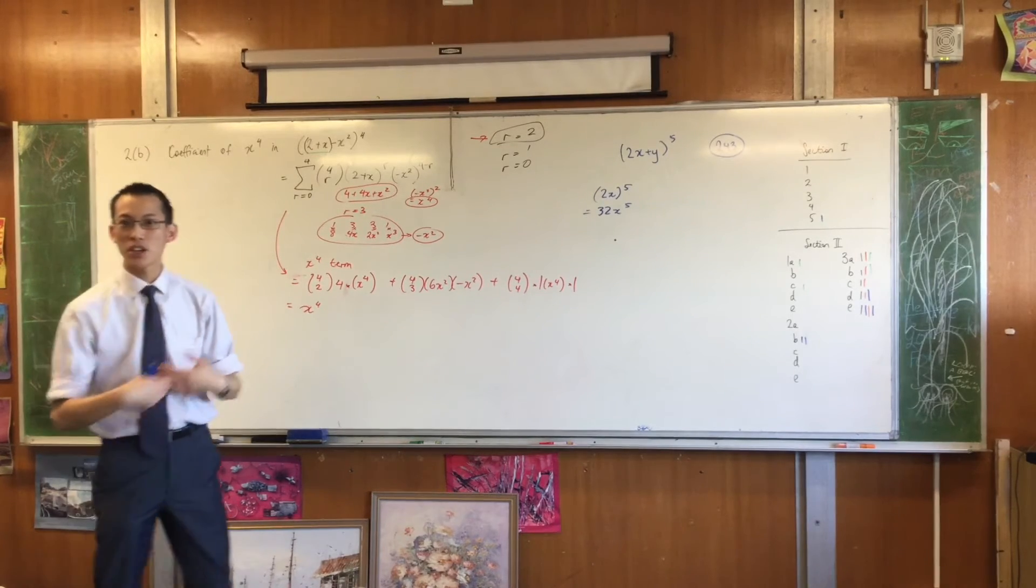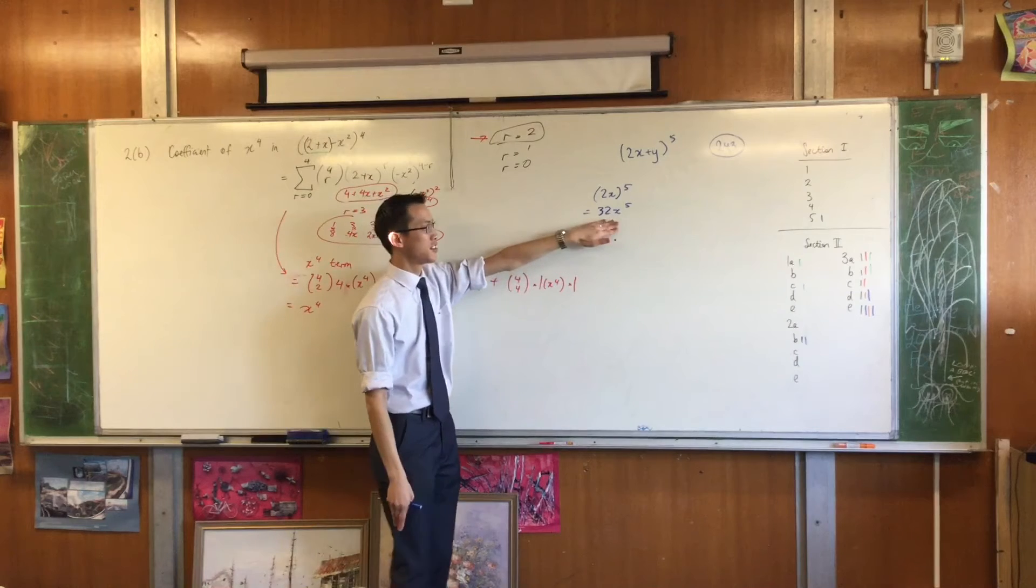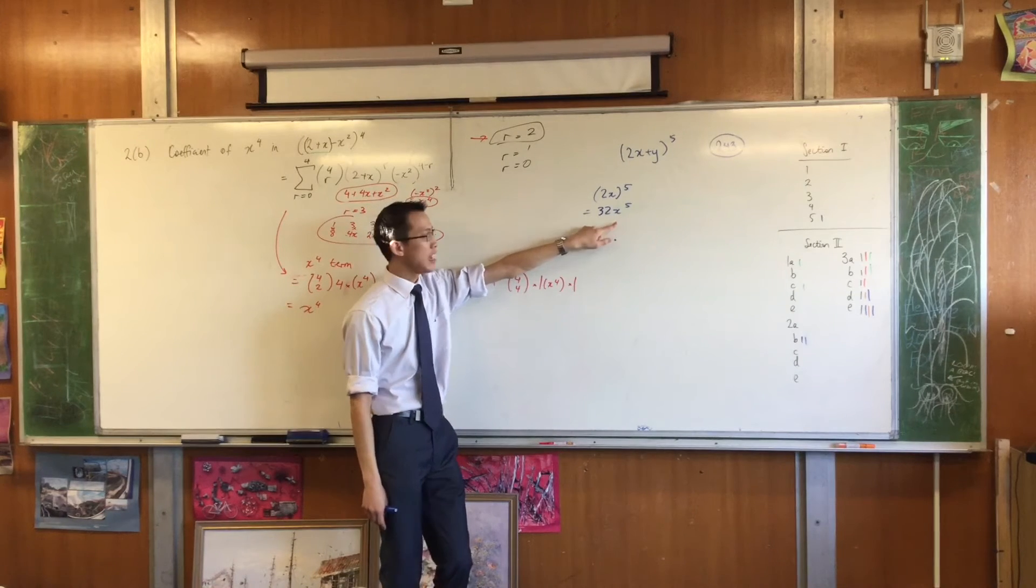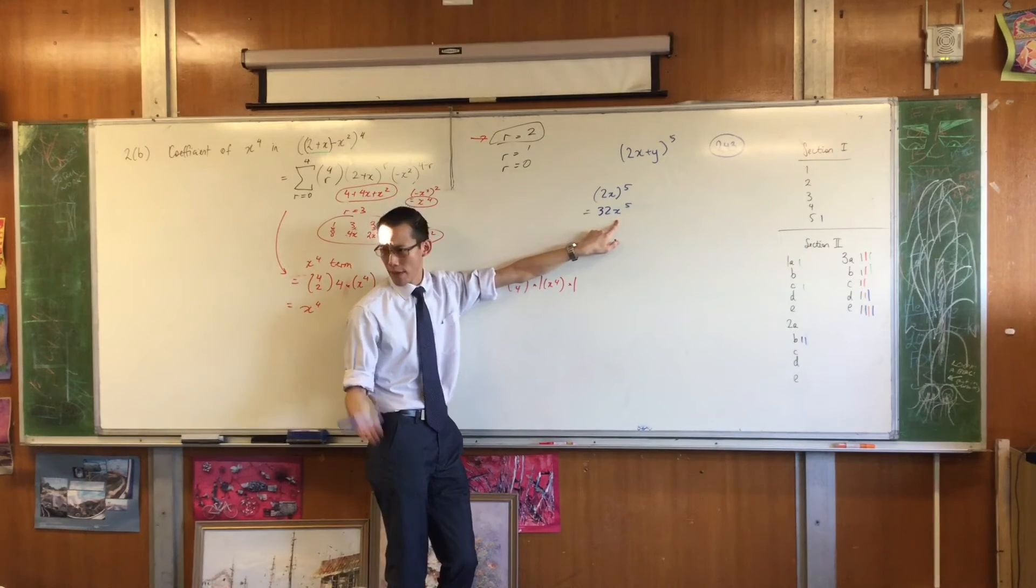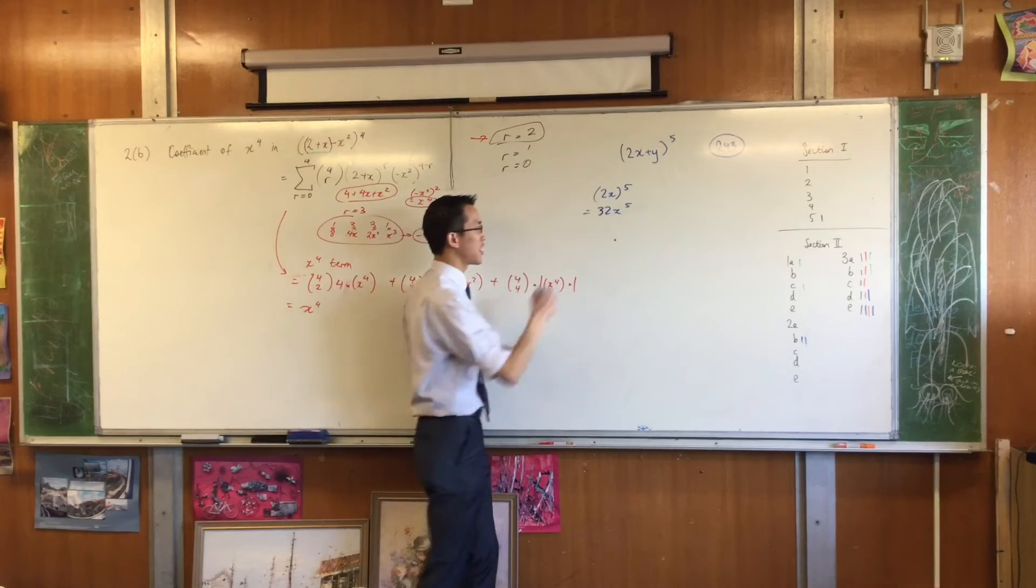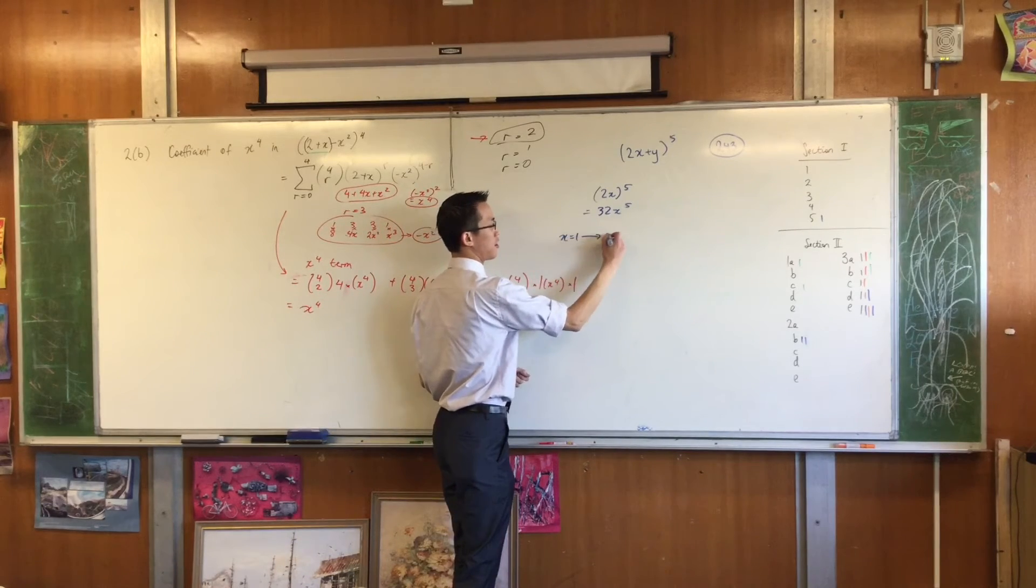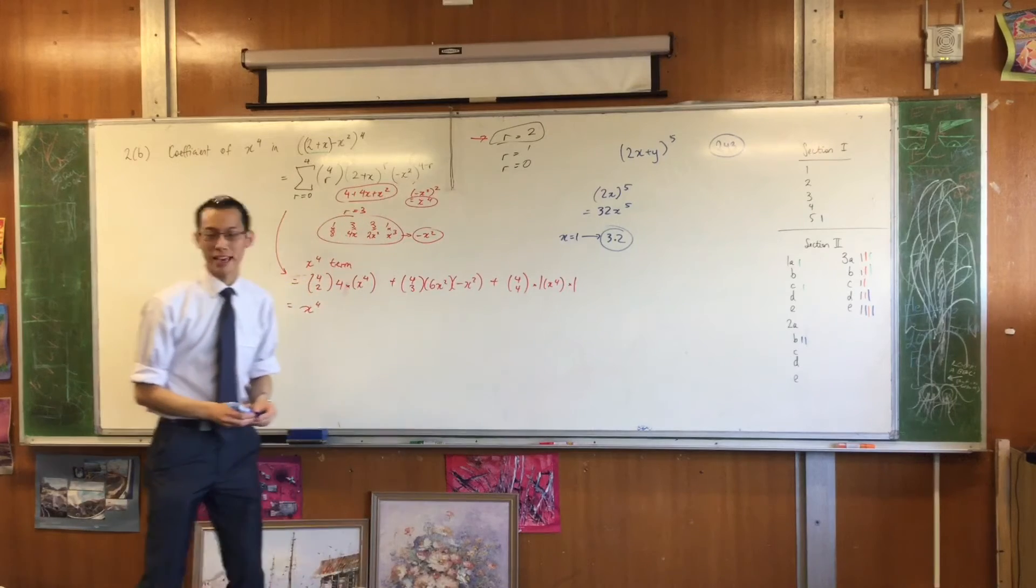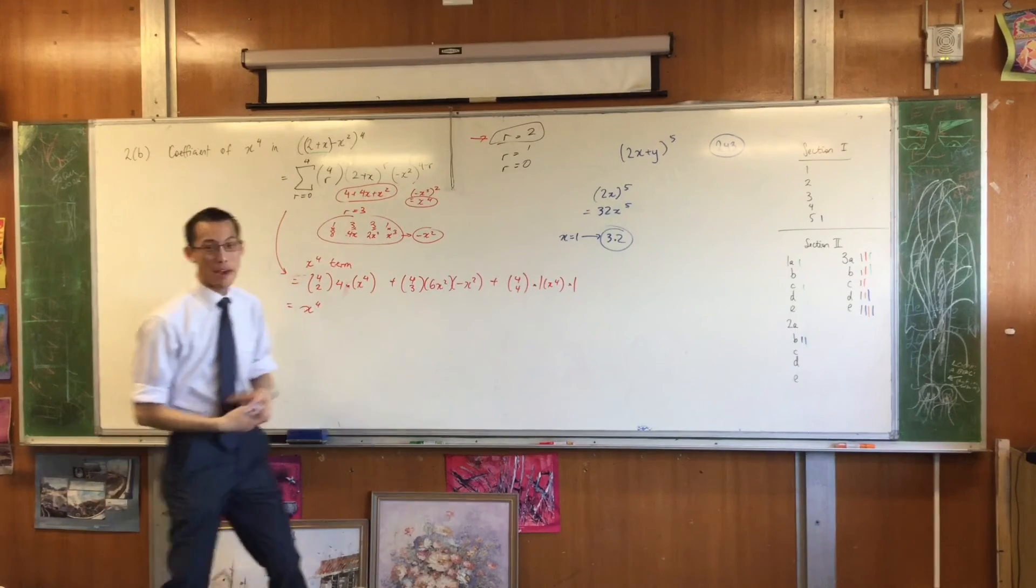There's a value for x and y that you can choose that makes them contribute nothing to the coefficients. If x were 1, you will just get out the 32, right? That's the part that you want.